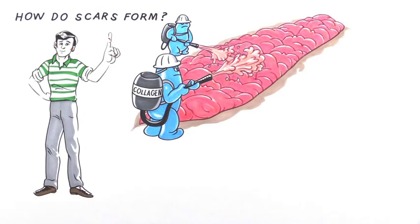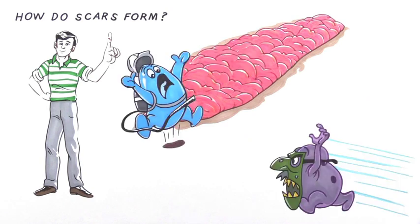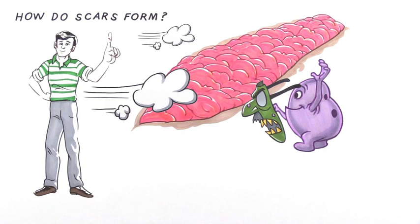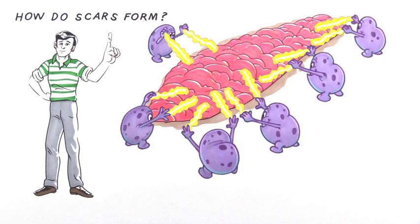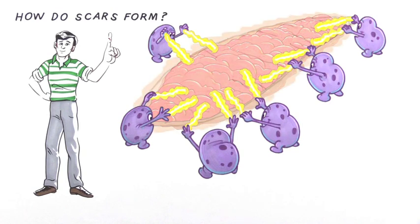If that scar were over a knuckle or a knee, it would limit the motion. So Mother Nature has this all figured out. When there is tension or occlusion on the skin, our cells make an enzyme called collagenase that comes to the rescue and melts the collagen.